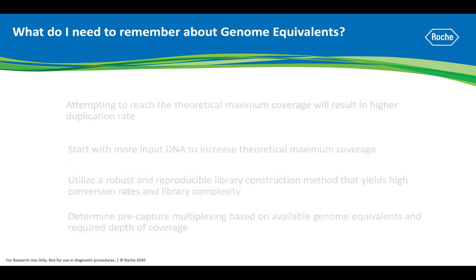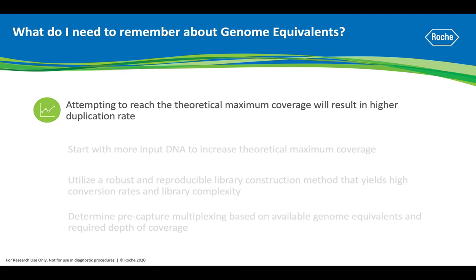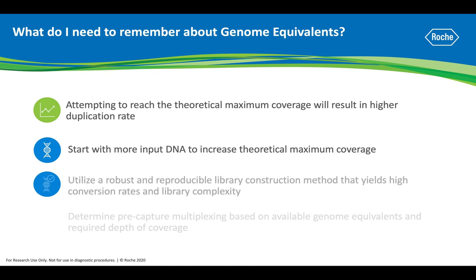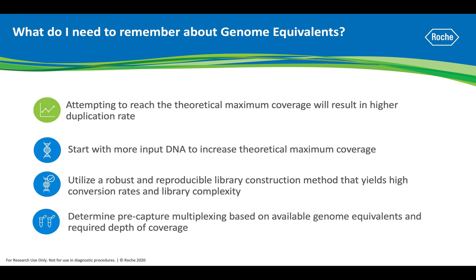So, what do you need to remember about genome equivalents? If you attempt to reach that theoretical max coverage, you'll see an increase in duplication rate as you over-sequence and sequence more of the same. If you are able to start with more input DNA, you're able to increase that theoretical max coverage. You should choose a library prep with high conversion rates that leave you with more complex libraries. And the amount of genome equivalents you have after size selection and your desired depth of coverage determine how many samples you can pre-capture multiplex.